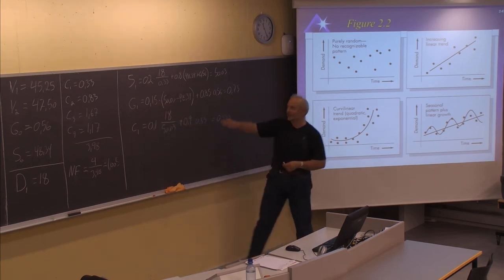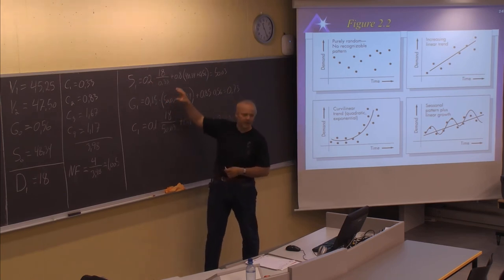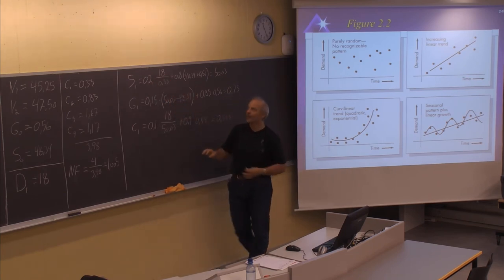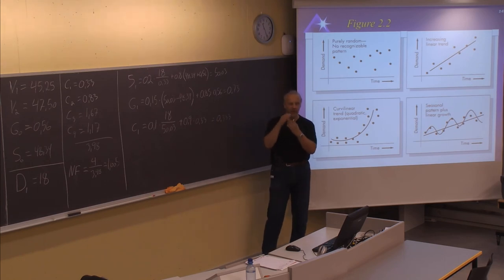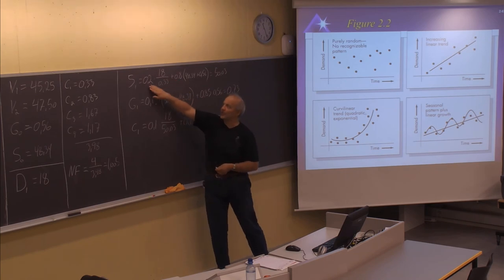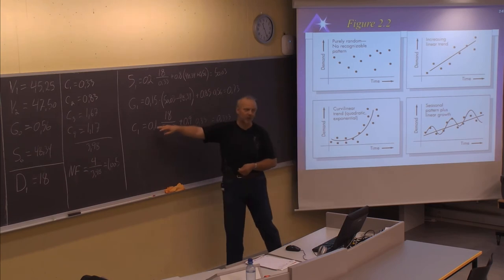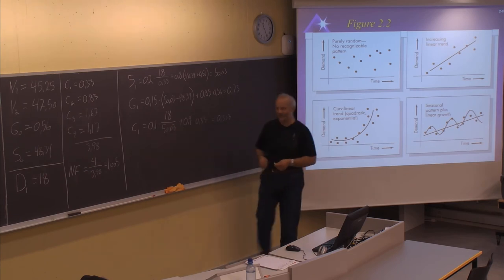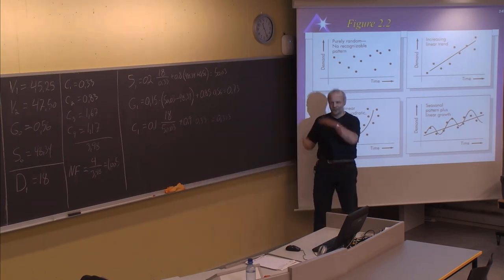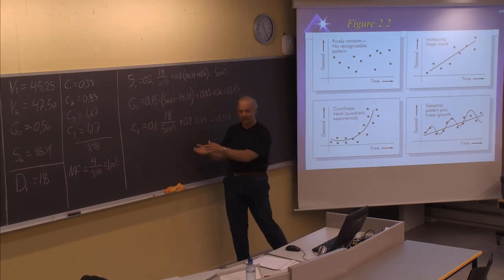What is 0.85? It's 1 minus beta, 1 minus 0.15. Similar to all the smoothing constants: you use the smoothing constant and multiply by the current value, and you use 1 minus the smoothing constant for the previous value. In this case 1 minus 0.2, in this case 1 minus 0.15, and 1 minus 0.1. This is the relative importance between the new value and the previous forecast.